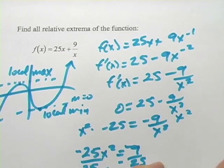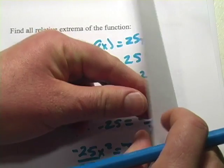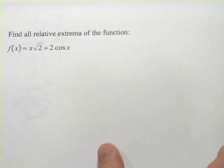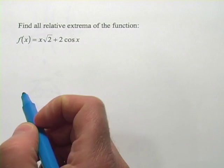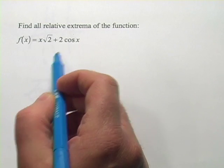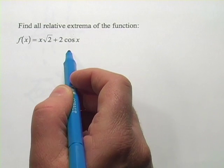Let's try one more of these. Here we have one with a trigonometric function. Our function is x times the square root of 2 plus 2 times the cosine of x.